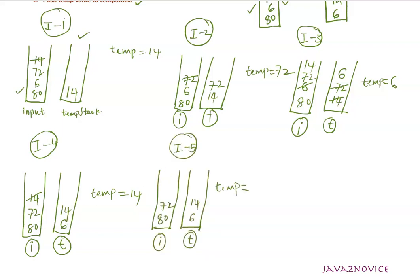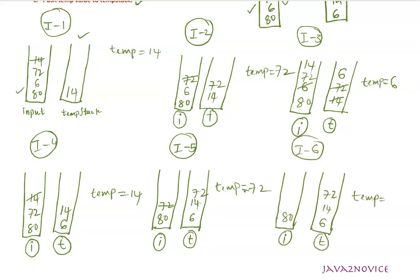In iteration 5, we pop out an element from the input stack and start comparing with temporary stack top values. Is 14 greater than 72? Definitely not. So we push the temporary value to temp stack. In iteration 6, we pop out another element from the input stack and assign it to the temporary variable. We compare: 72 is less than 80. So we just push 80 to the temporary stack.